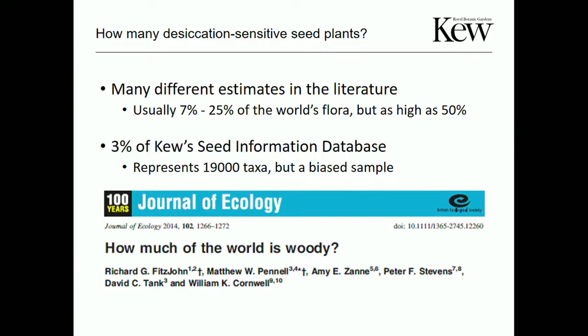We've got a binary trait related to taxonomy. Using FitzJohn, Pennell et al.'s 2014 method for unbiased prediction of binary trait incidence, we used the plant list to get our species list of all seed plants and imputed the values of unknown species using known values of their relatives.